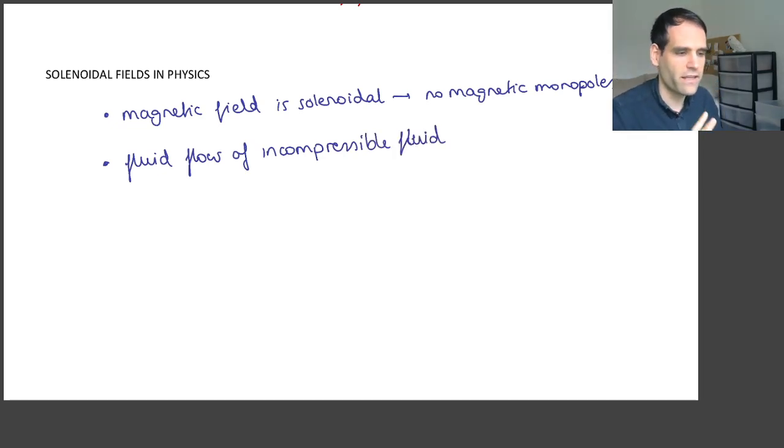Because fluid cannot be... There cannot be more fluid coming into a volume than it goes out of the volume. Otherwise, you would be accumulating fluid in that volume and you would be compressing it. So the flux on any closed volume must be zero.